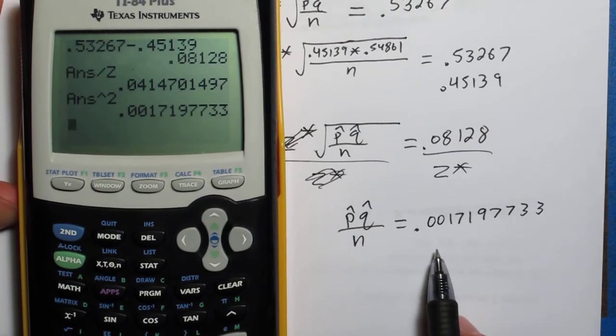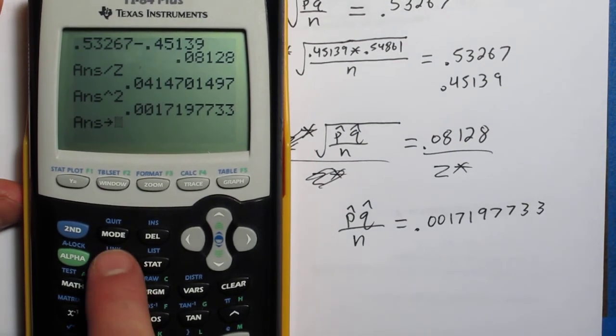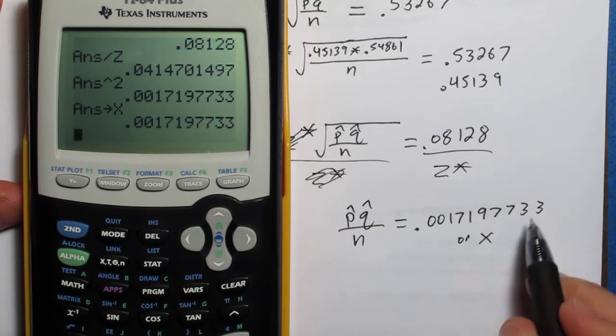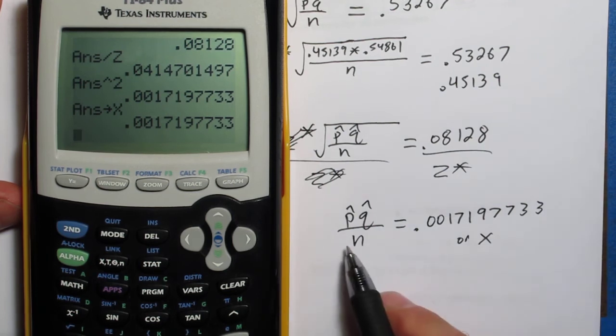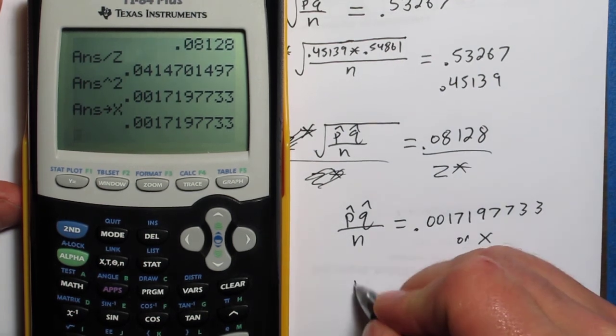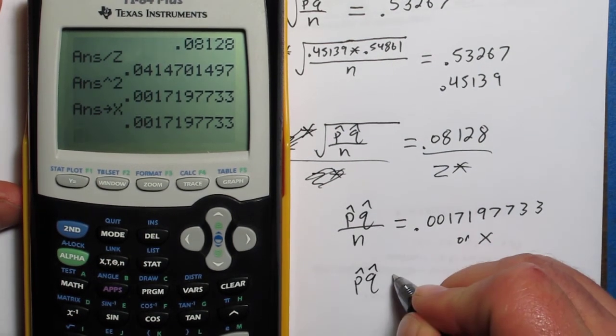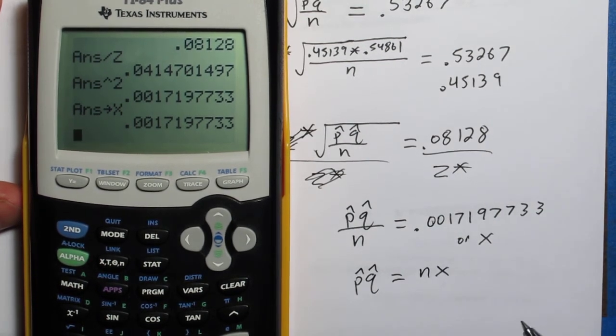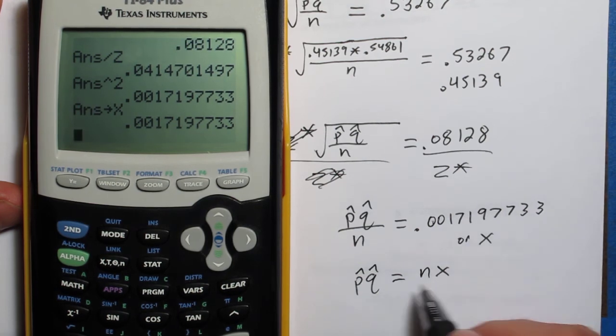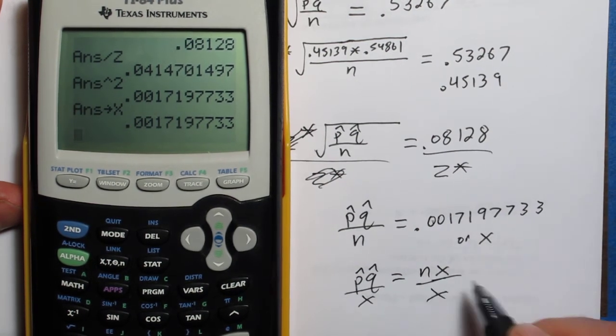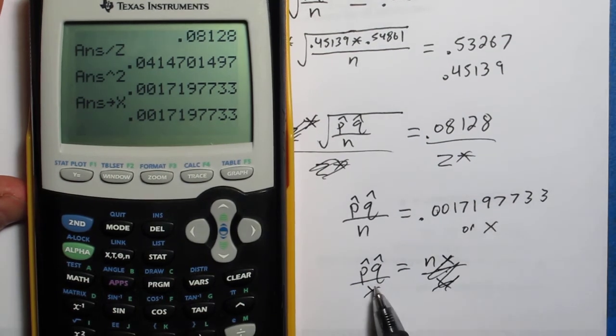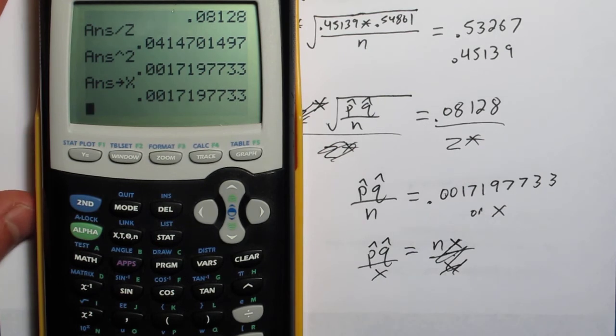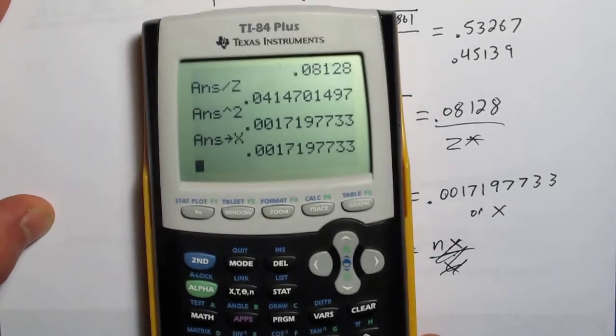You know what? I'm going to store this as x. Store as x. So this value is x. If we multiply both sides by n, we get this. p-hat q-hat equals nx, because I stored that as x. Finally, if we divide both sides by x, we get n. n equals that. So I need to take p-hat, multiply it by q-hat, and then divide by the thing I've stored as x. So let's see. Here's p-hat and q-hat up here. All right.